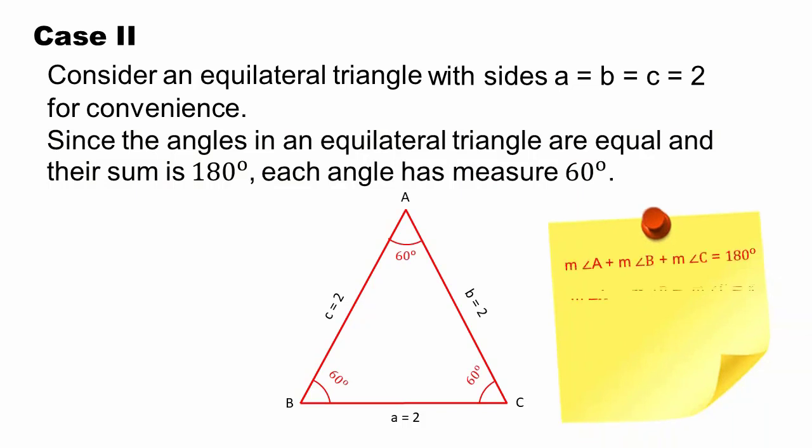The sum of angles in a triangle is 180 degrees. Therefore, every angle in an equilateral triangle is 60 degrees.